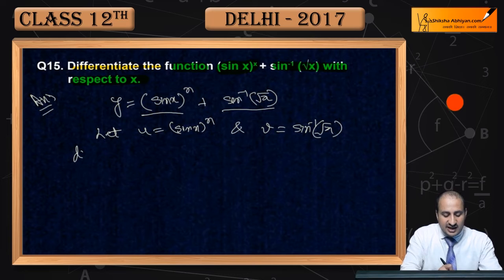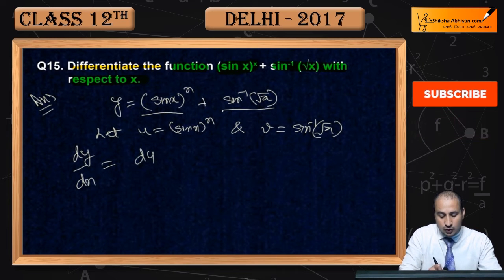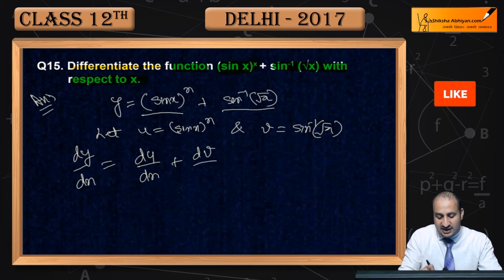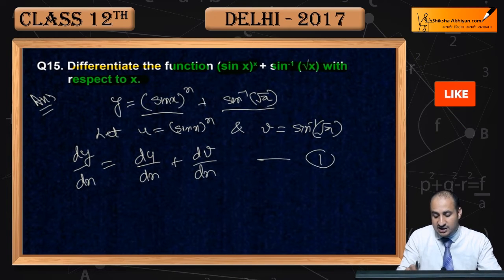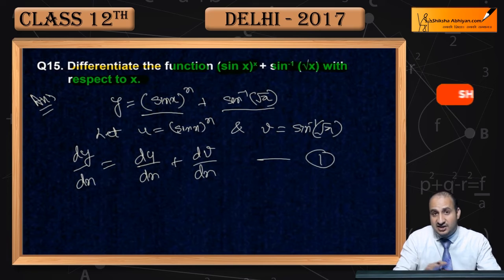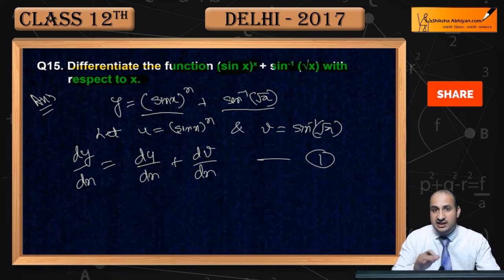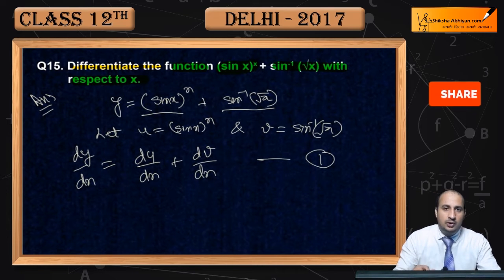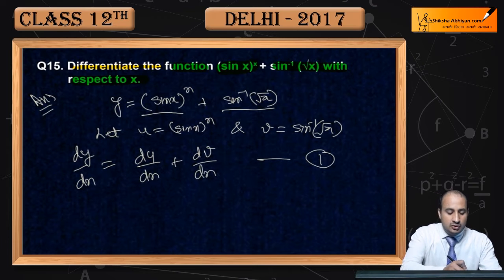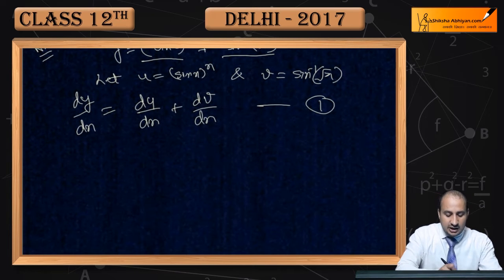Ab dy/dx — differentiation of the function kya ho jayegi — dy/dx = du/dx + dv/dx. Yeh ho jayegi. Mark kar lijiye. First yahan par du/dx alag se nikaaliye, dv/dx alag se nikaaliye, phir put kariye — woh hogi function ki differentiation.